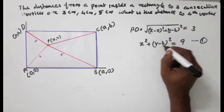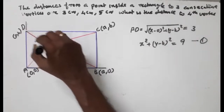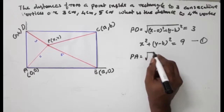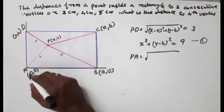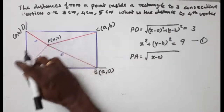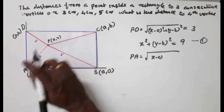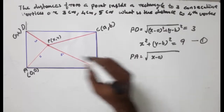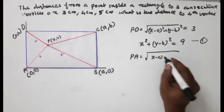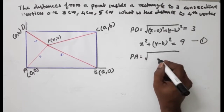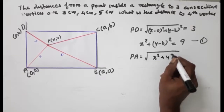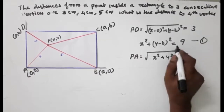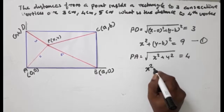The distance PA: x squared plus (y minus b) all squared equals 9. The distance from P to vertex A — the root of (x minus 0) all squared plus y squared.